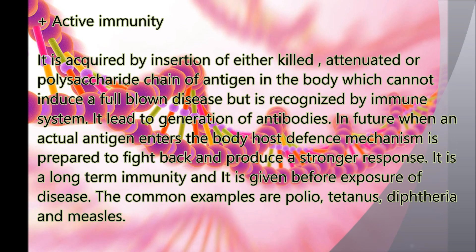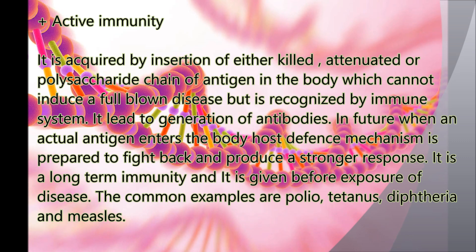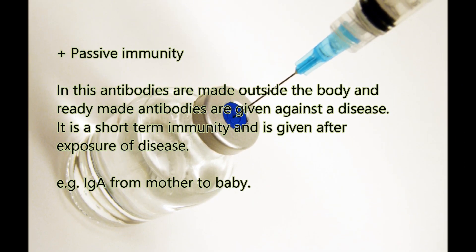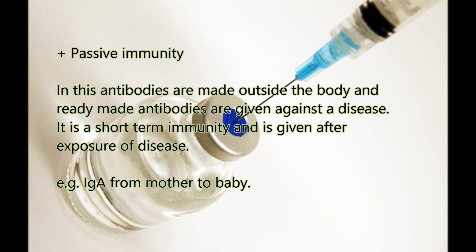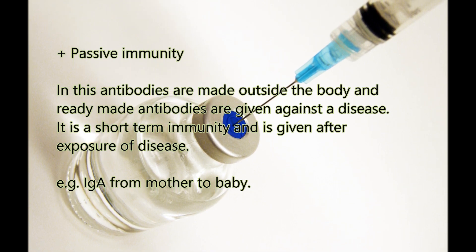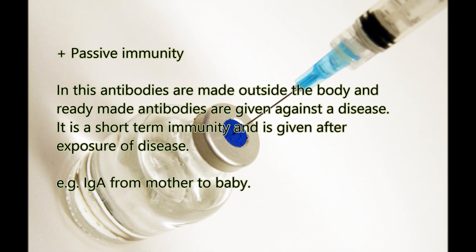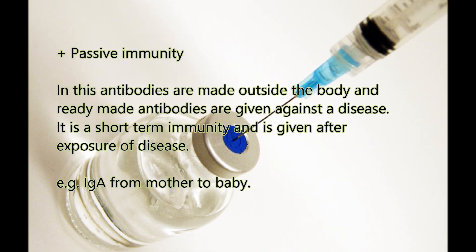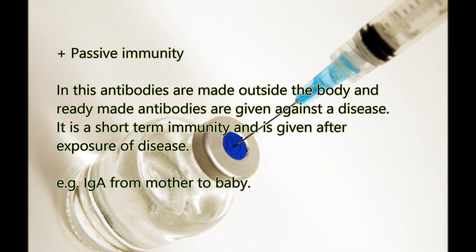Common examples of active immunity are polio, tetanus, diphtheria, and measles. Passive immunity: Antibodies are made outside the body and ready-made antibodies are given against a disease. It is short-term immunity and is given after exposure to disease — that is, it has therapeutical value. Example: IgA from mother to baby.